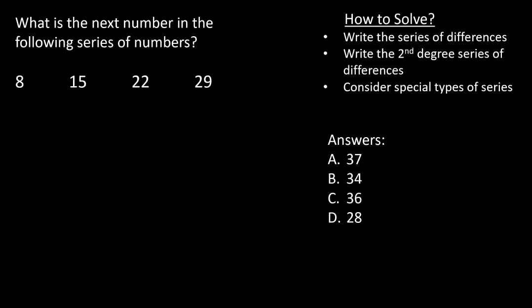We see an increasing sequence of numbers. Let's write a series of differences and see if we can identify a pattern. So 8 to 15, that's a plus 7. 15 to 22, that's also plus 7, and so is the difference between 22 and 29.